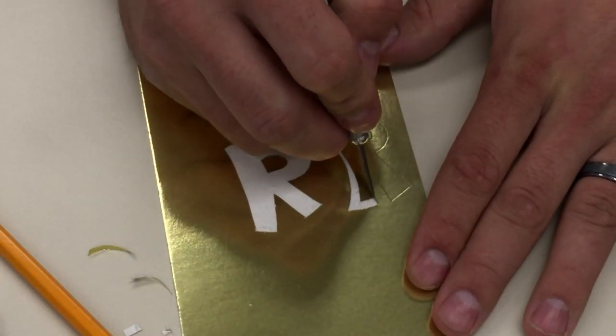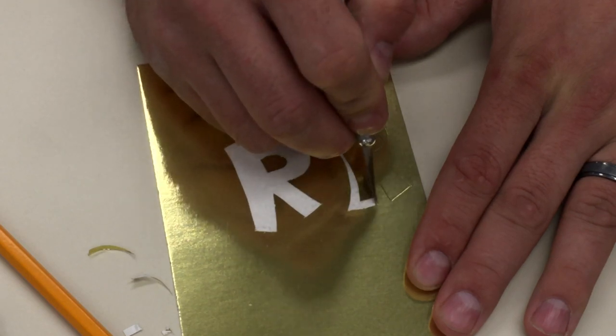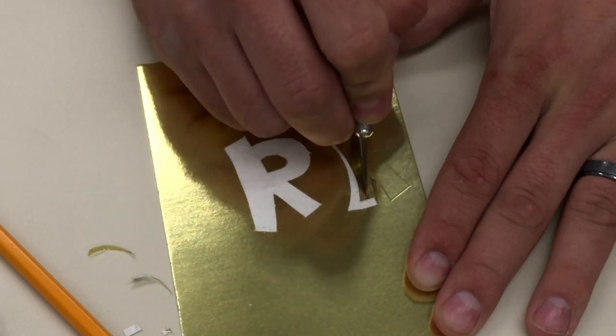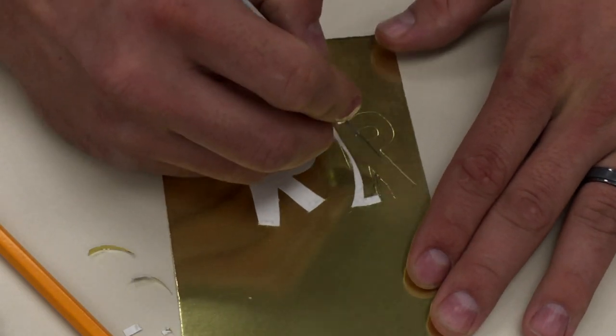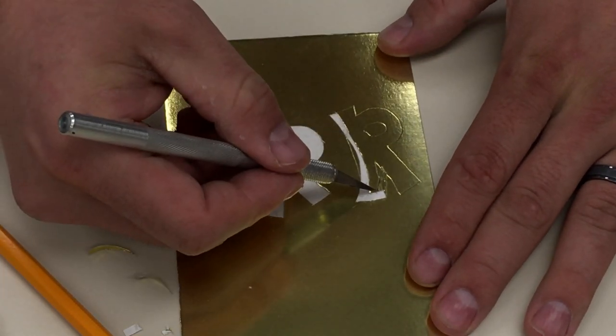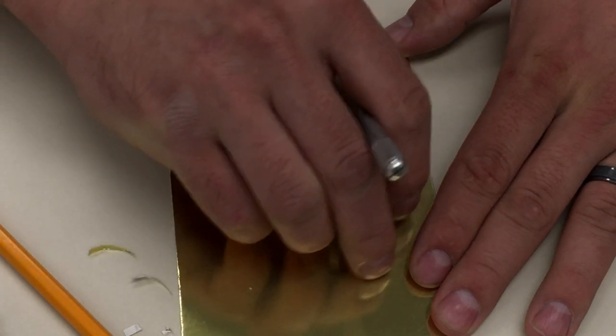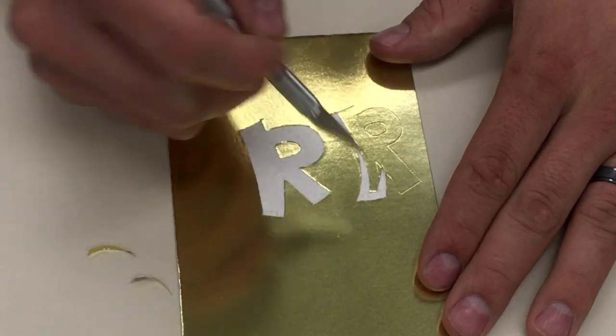So you can see as I'm going along I'm still maintaining the basic shape of that R. Except for I'm doing some areas thick and some a little bit thinner. Just outlining the word.